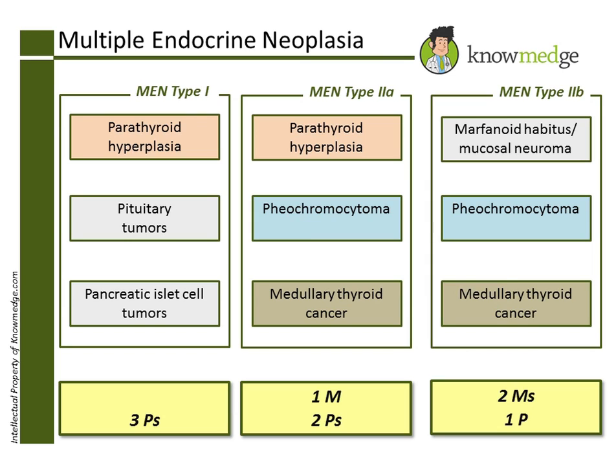Now let's go through the answer choices. Choice A is incorrect because all types of MEN are autosomal dominant diseases. Choice B is incorrect as well. Pancreatic islet cell tumors usually release increased insulin or increased gastrin levels into the bloodstream.